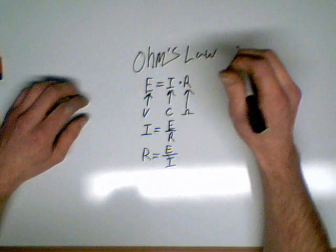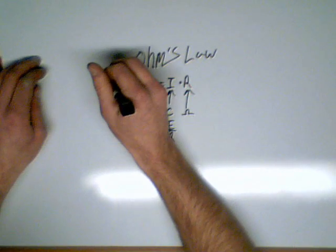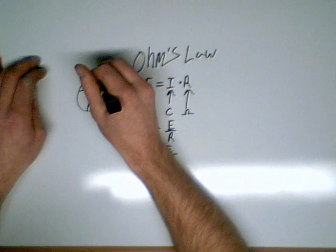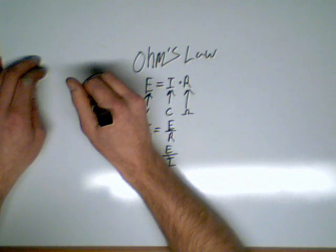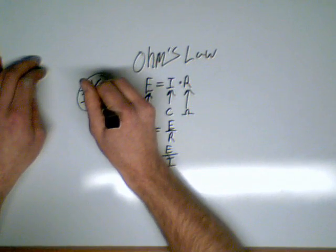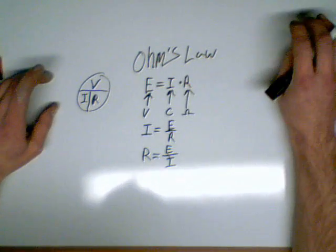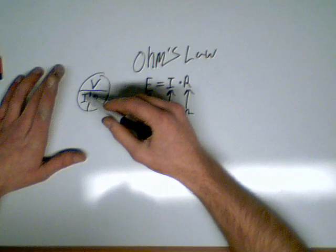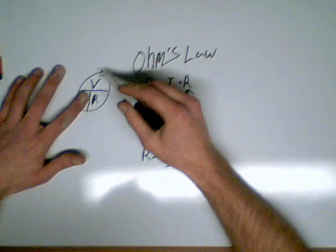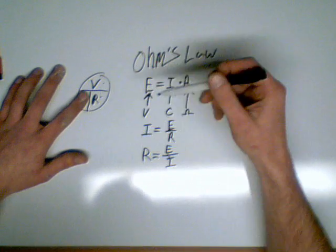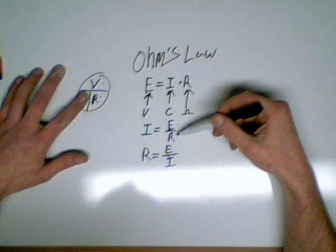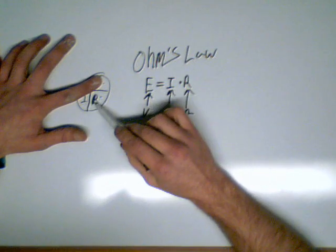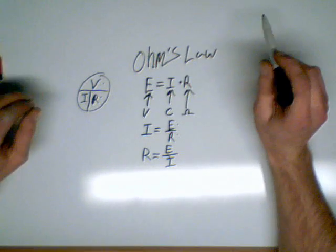A simple way to memorize this is take a little circle, draw it like that, and put voltage, current, and resistance. And if you want to solve for one, cover up one of them. So if you're solving for current, it equals voltage divided by resistance. If you're solving for voltage, it equals I times R. This is a simple way to remember the formula.